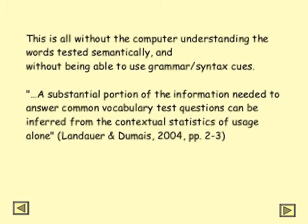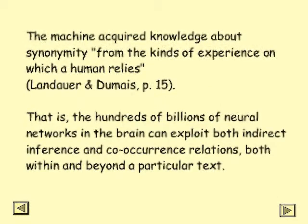Remember, this is all without the computer actually understanding the words being tested, and without being able to use grammar and syntax for cues. So Landauer and Dumais conclude that a substantial portion of the information needed to answer vocabulary test questions can be inferred from the context — the statistics of usage. This is really short-circuiting the need for a Chomskyan universal grammar or an acquisition device in the brain. The machine acquired knowledge about synonymity from the kinds of experience on which a human relies — the hundreds of billions of neural networks in the brain can exploit both indirect inference and co-occurrence relations, both within and beyond a particular text.